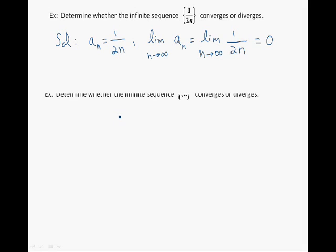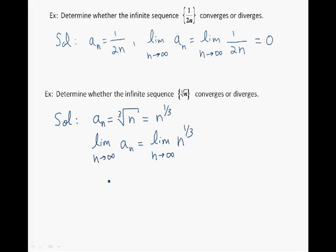We're going to continue with another example: determine whether the infinite sequence of the cube root of n converges or diverges. And here's the solution. We write the an term, which is the cube root of n, equal to n to the power 1 over 3. We then find the limit as n approaches infinity of an. To find this limit, we need to know how the function n to the power 1 over 3 behaves, so let's look at its graph. We see that as n approaches infinity, the graph goes to infinity. Hence the limit is equal to infinity, and in this case we say that the infinite sequence diverges.